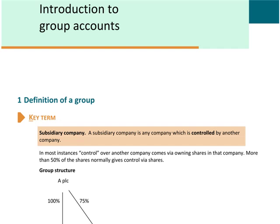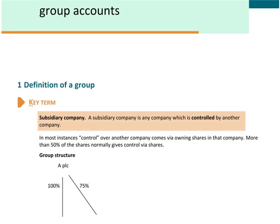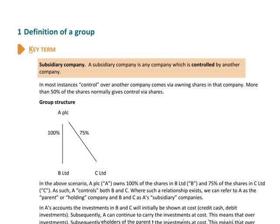And what we've created is a group of companies. Now normally we have control over another company if we own more than 50% of the shares in it. However, we'll see at the end of this chapter that there may be exceptions to this rule, but for the time being we're going to assume that we control a subsidiary company if we own more than 50% of the shares.